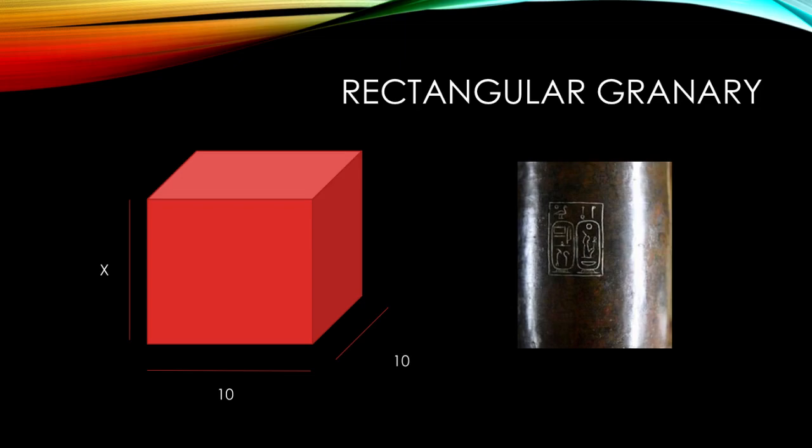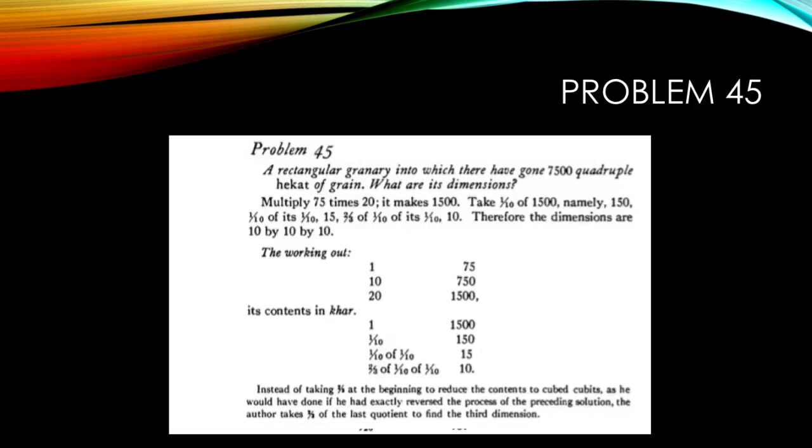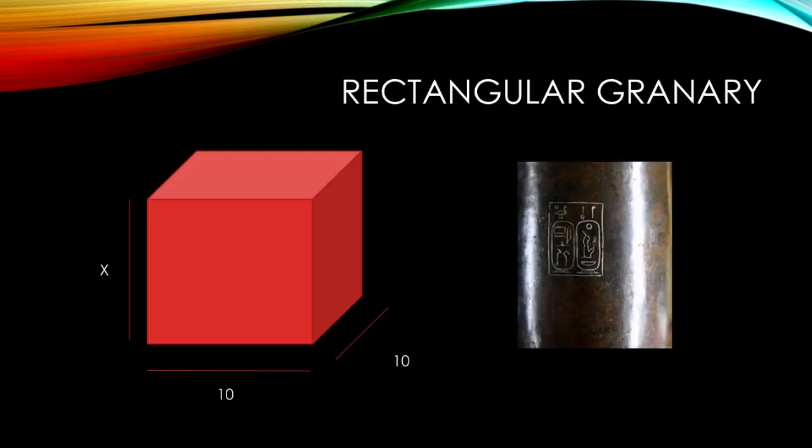Here we are given the cubic content of a container. Our rectangular granary has a volume of 7500 quadruple hekat. We are asked what are the dimensions. We assume that the length and the width are 10 for each and now we want to know what the height of that granary is.